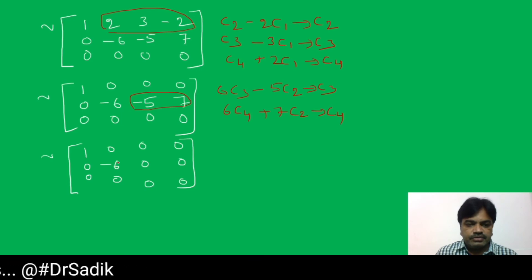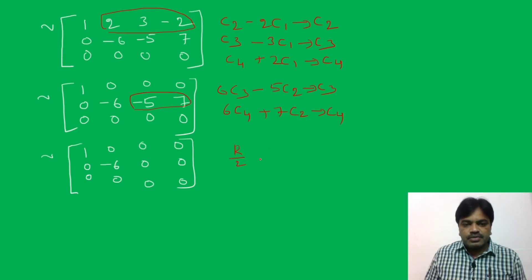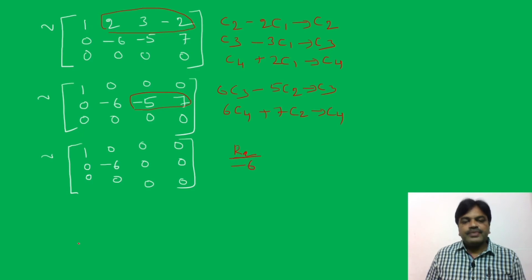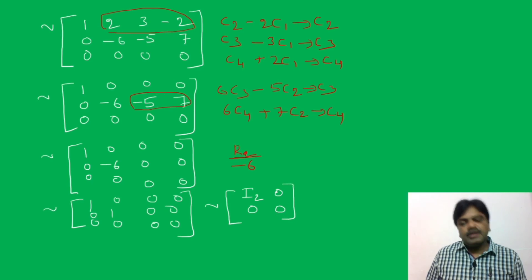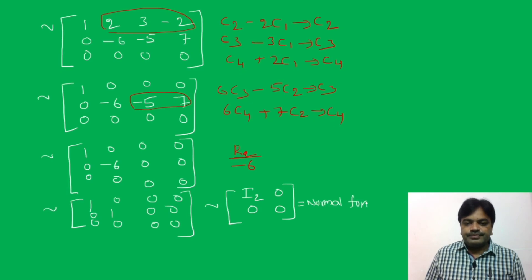Now I want to make the diagonal element 1. So I divide R2 by minus 6, that is R2 by minus 6. This gives us: row 1 is 1, 0, 0, 0; row 2 is 0, 1, 0, 0; row 3 is all zeros. The number of non-zeros is 2. This is equivalent to I2, 0, 0, 0 — the normal form — and therefore the rank of the matrix is 2.